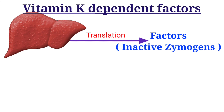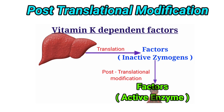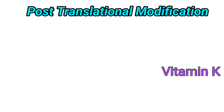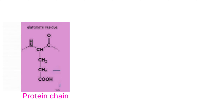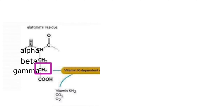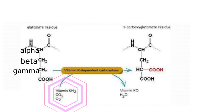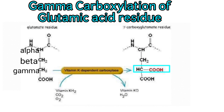These zymogens are the product of translation; they must undergo post-translational modification to become active. Vitamin K is involved in this post-translational modification. You are seeing a glutamic acid residue in the protein chain — naming the carbon skeleton alpha, beta, and gamma. The gamma carbon already has one carboxylic acid group, and this gamma carbon is again carboxylated in the presence of vitamin K, carbon dioxide, and oxygen to form gamma-carboxylglutamate. This entire post-translational process is called gamma carboxylation of glutamic acid residues.